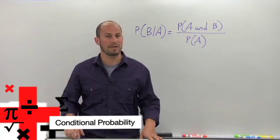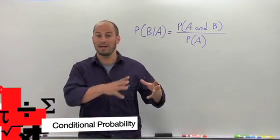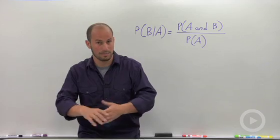Conditional probability is a probability that we're looking at when we are given one outcome already has occurred and we're trying to find another outcome.